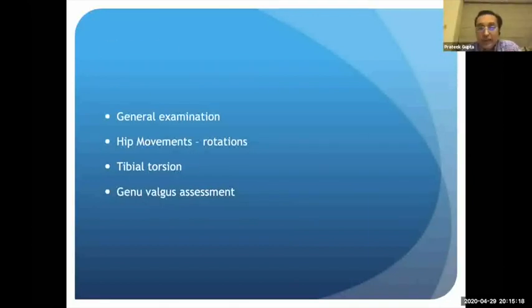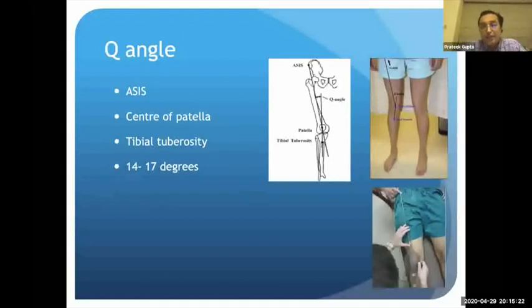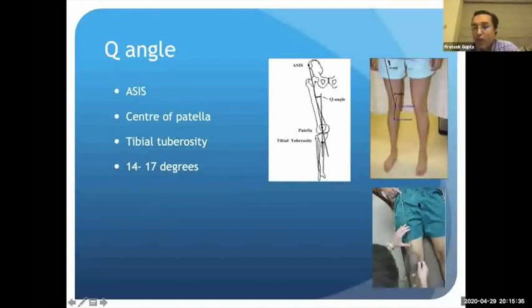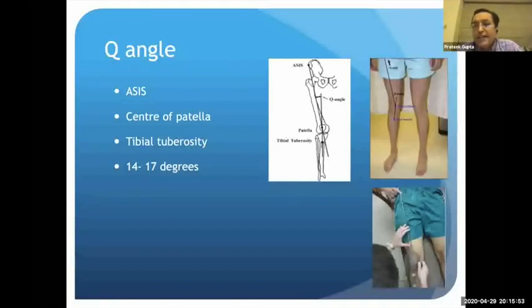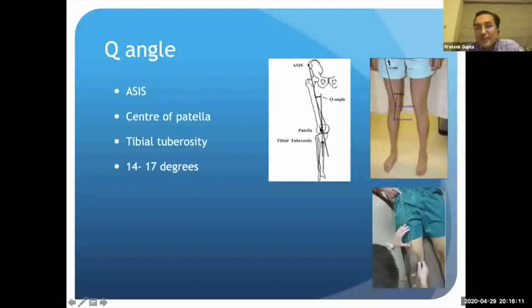At the knee joint, Q angle is measured. We draw a line from the ASIS through the center of the patella, then from the center of the patella to the center of the tibial tuberosity; the angle formed is normally 14 to 17 degrees. Measurement is done in near-extension because in flexion the patella engages and may reduce the Q angle. If it is more than 18 degrees, it suggests a lateral vector pushing the patella outward, indicating possible instability — often due to a malpositioned tibial tuberosity.